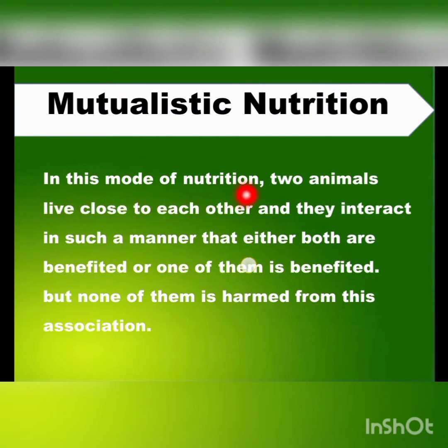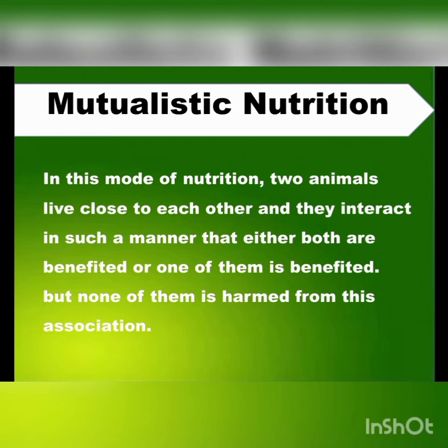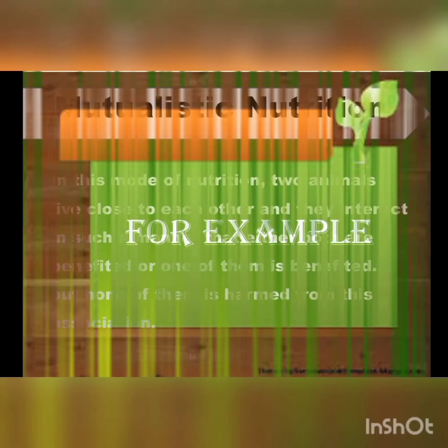In mutualistic nutrition, two animals live close to each other and interact in such a manner that either both are benefited or one of them is benefited. But none of them is harmed from this association.